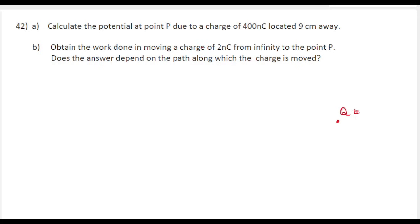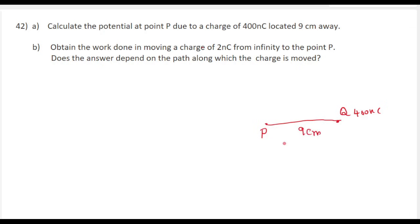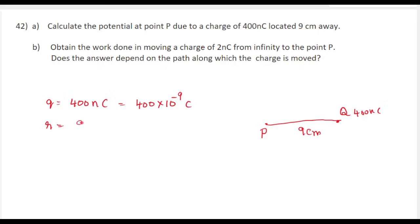We have a charge q which is 400 nanocoulomb, located 9 centimeters away from a point P. Let us write what is given. Charge q is 400 nanocoulomb — nano means 10 to the power of minus 9 — so we can write this as 400 into 10 to the power of minus 9 coulomb. The distance r equals 9 centimeters, which we need to convert into meters: 9 into 10 to the power of minus 2 meter.